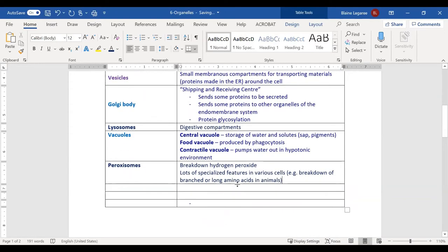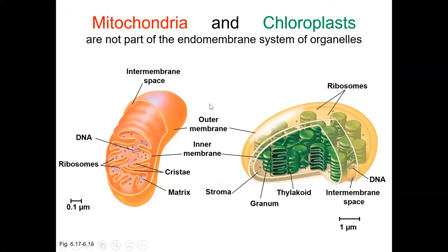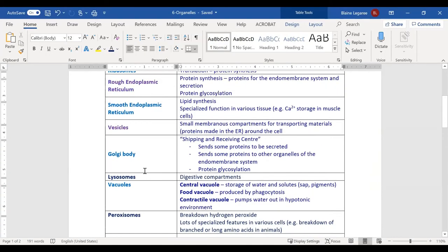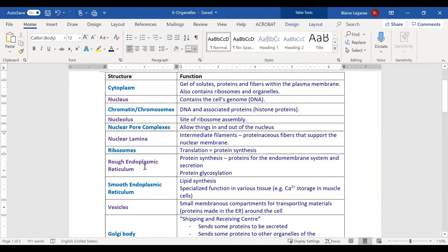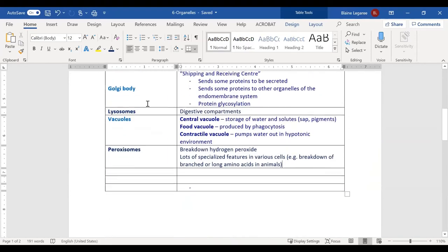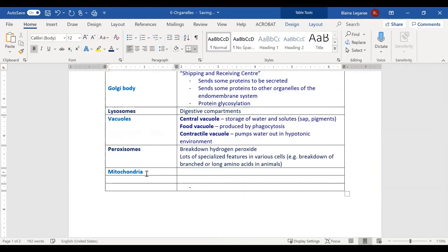We're getting near the end of this unit. Everything we've discussed that has a membrane is part of the endomembrane system — except for mitochondria and chloroplasts. Those are coming up next. Mitochondria are the site of cellular respiration, and chloroplasts are the site of photosynthesis.